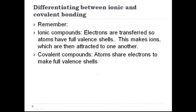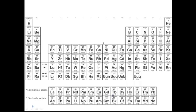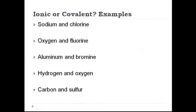Remember the difference between ionic and covalent bonding. In an ionic bond, electrons are transferred from one atom to another to make an ion, and then the ions are attracted to each other. This is very different from a covalent bond, where atoms share pairs of electrons to make a full valence shell. For the following examples, we're going to determine if an ionic bond or a covalent bond will be formed. Our first example is sodium and chlorine. Sodium is over on the left and chlorine is on the right. Since sodium is a metal and chlorine is a nonmetal, they're going to transfer an electron, become ions, and make an ionic bond.